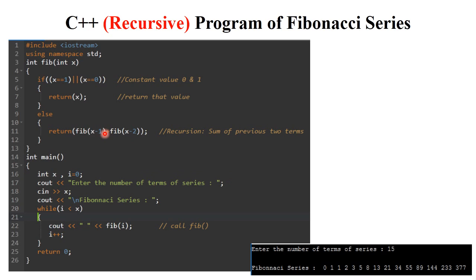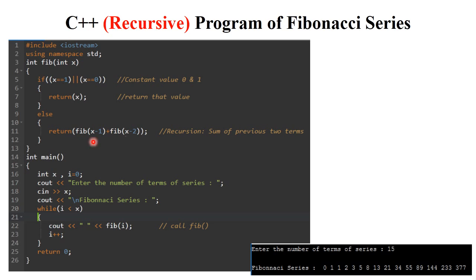A simple if-else statement is used along with the recursion — recursion means a function calling itself. In 'integer fib(integer x)' with x equal to 15: the first two numbers are constant. If x equals 0 or x equals 1, the function returns x, printing the first two values. If more than two values are needed, it goes to the else branch.